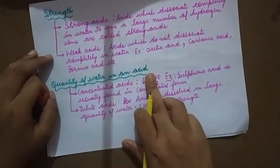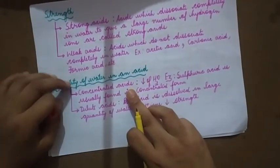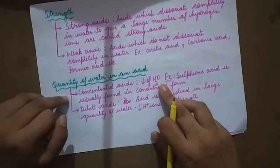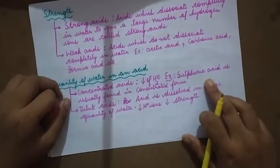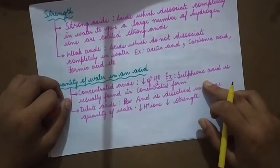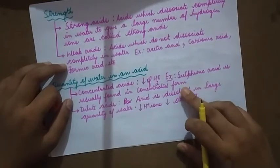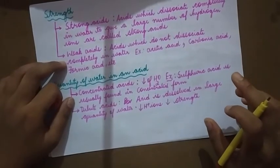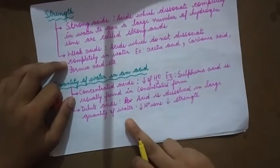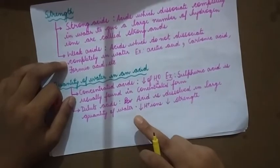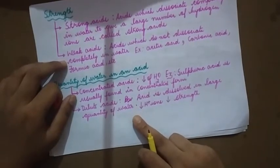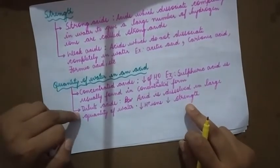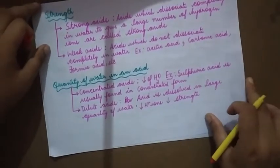Quantity of water in an acid. Concentrated acid has very little water — sulfuric acid is usually found in concentrated form. Dilute acid is an acid dissolved in a large quantity of water, so more water is present. There are fewer H+ ions in dilute acid, and the strength of the acid is also less.